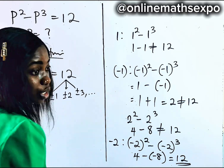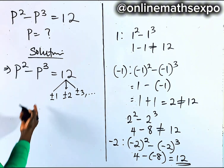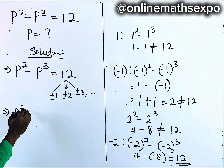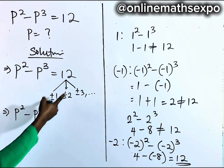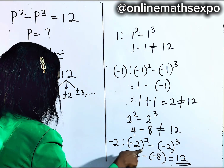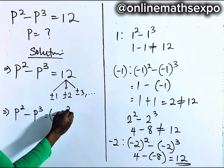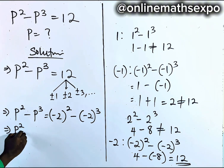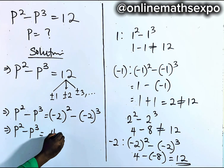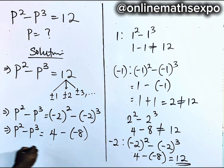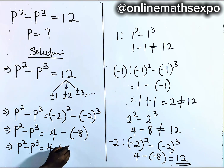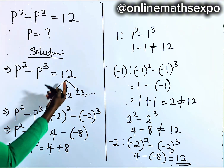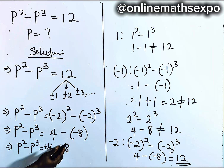With this one value it will help us find the other solutions. We have P squared minus P cubed equal to 12, and we're replacing 12 with negative two squared minus negative two cubed. Simplifying: negative two squared gave us four, and negative two cubed gave us negative eight, so four plus eight equals 12. That checks out.